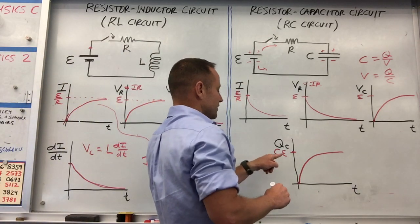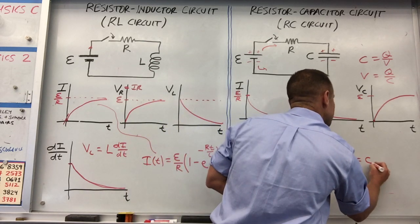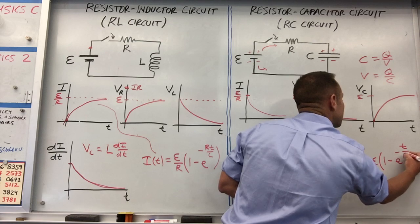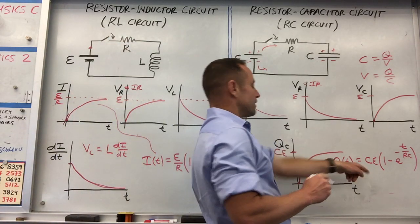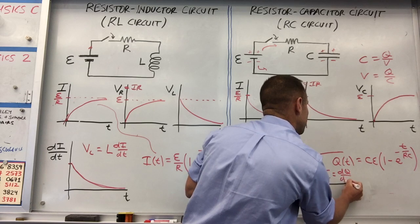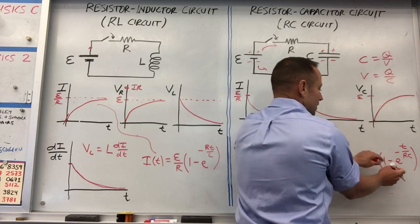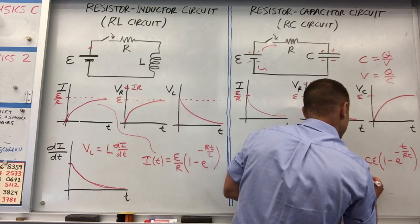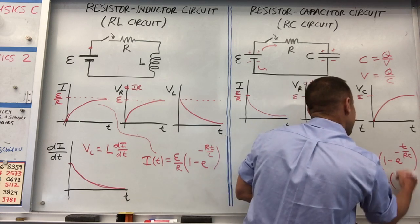So Q(t) is an exponential approach: Q(t) = Cε(1 − e^(−t/RC)). To get the current, you take the derivative because I = dQ/dt. Taking the derivative of that expression, the constant term gives nothing, so you differentiate the exponential term, bringing down a factor of 1/RC: you get −(1/RC) times Cε times (−e^(−t/RC)).